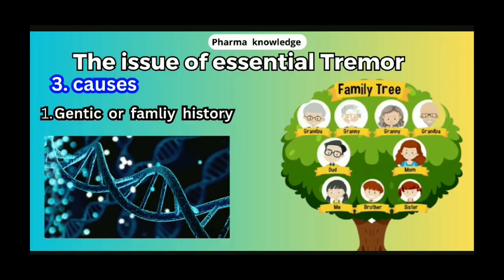The first cause is Genetic or Family History. If there is a disease in the family history, the patient can inherit it. If they have the disease in the family, they can get the disease through the genetic process.